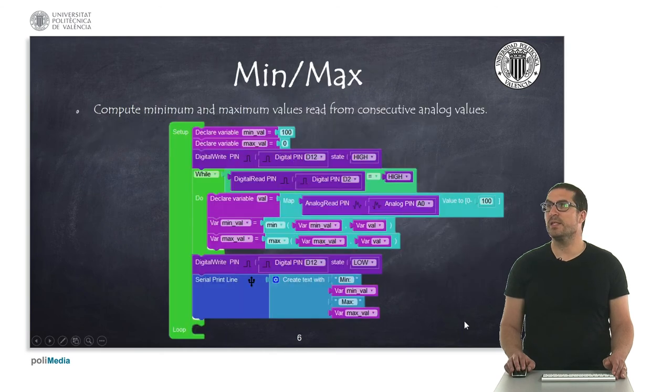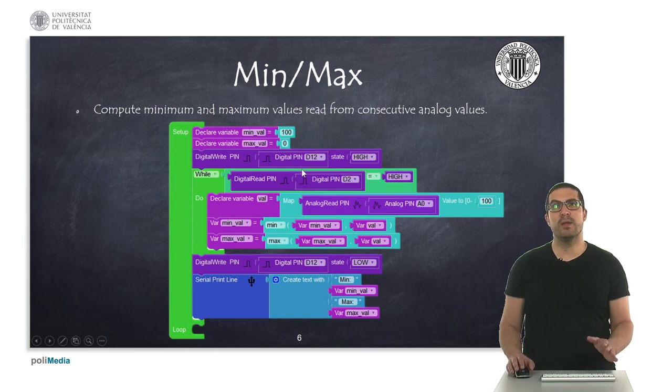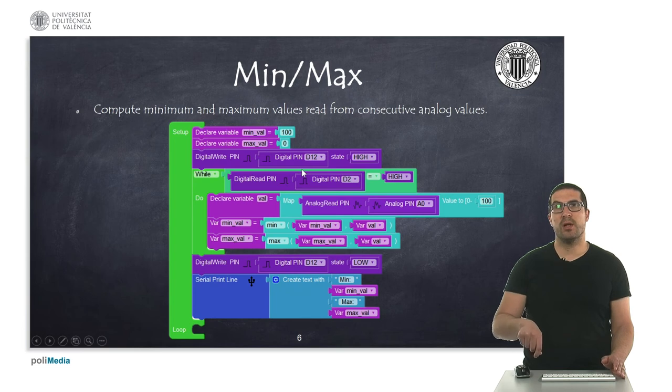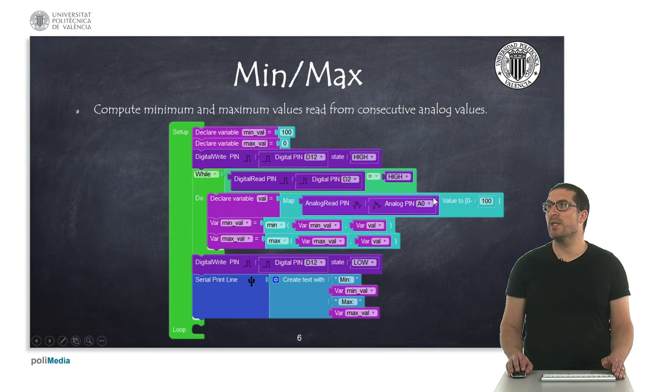Then, in this second example, we are computing the minimum and the maximum values that we have introduced with the analog potentiometer connected to pin A0, and this will be measured during certain time of period, which corresponds to the time when we press the switch button D2.